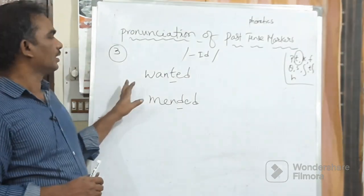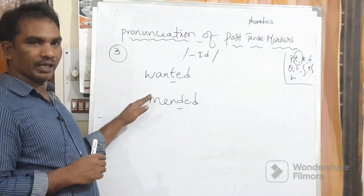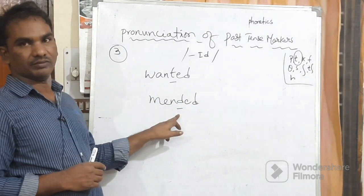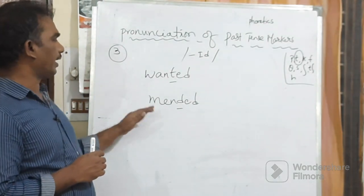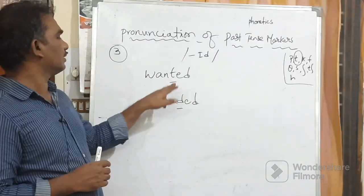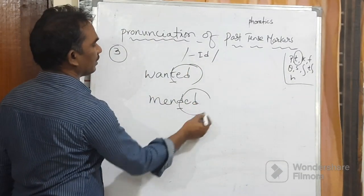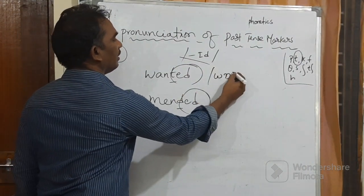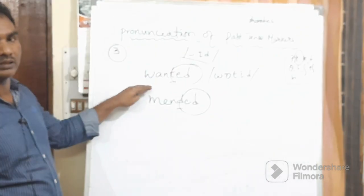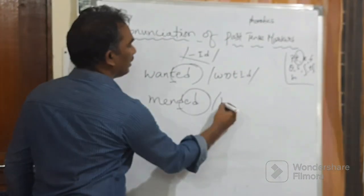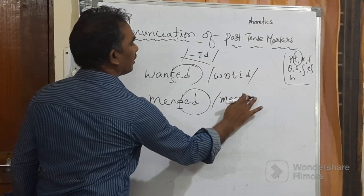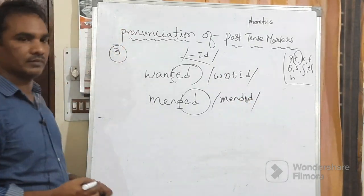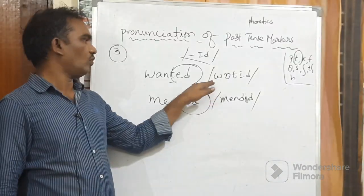The third rule is: in the first and second rules there are two exceptions — /t/ and /d/. In case the present tense word ends with a /t/ or /d/ sound, the past tense marker is pronounced as /ɪd/. For example: 'want' → 'wanted,' and 'mend' → 'mended.' So those are the three rules for pronunciation of past tense markers.